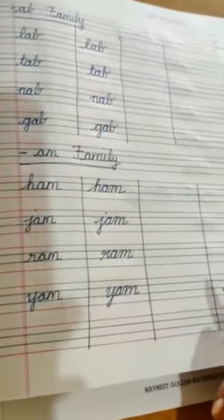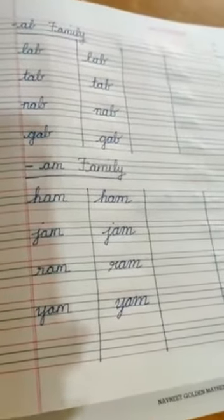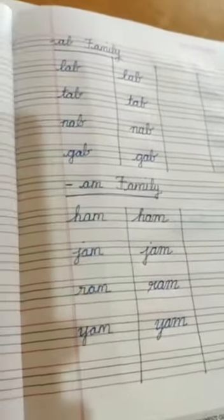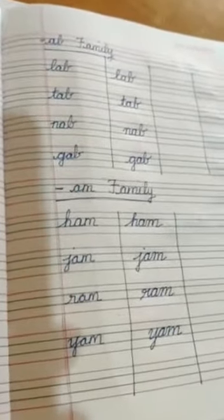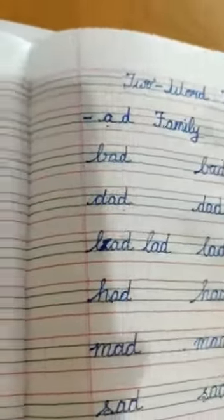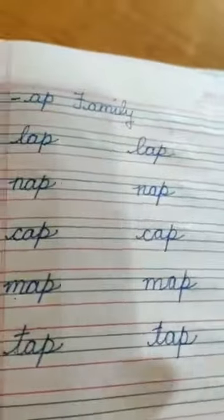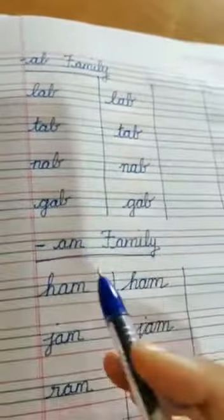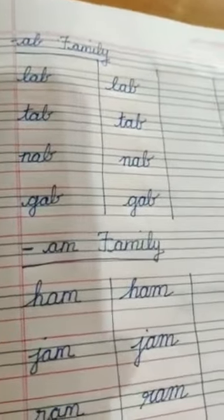So, this is the A-letter families. What all did we look at? AD family, AN family, AP family, AT family, AB family, AM family.